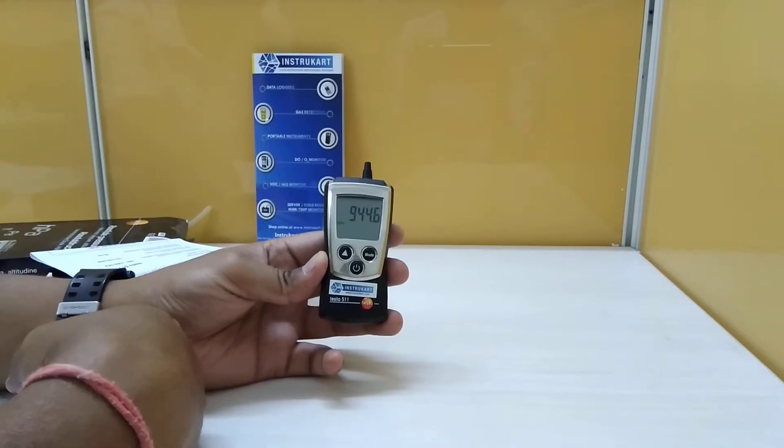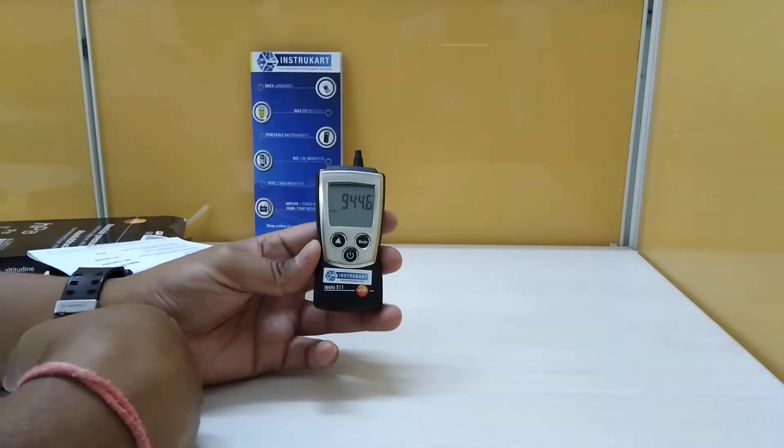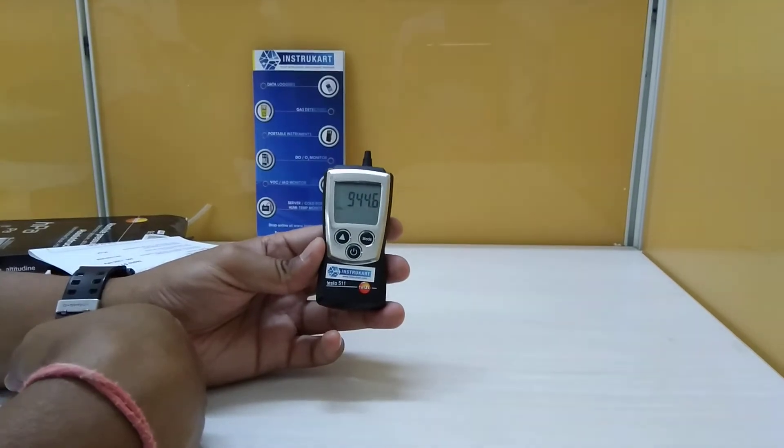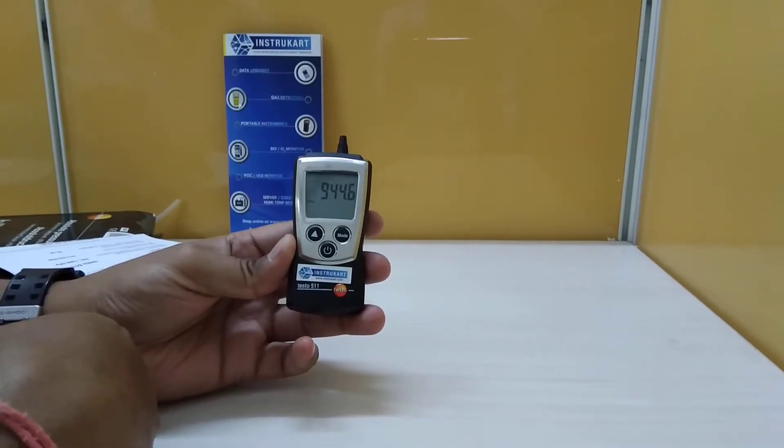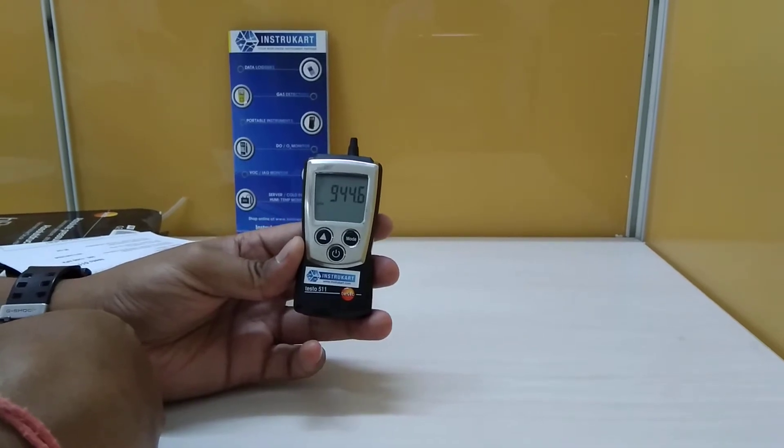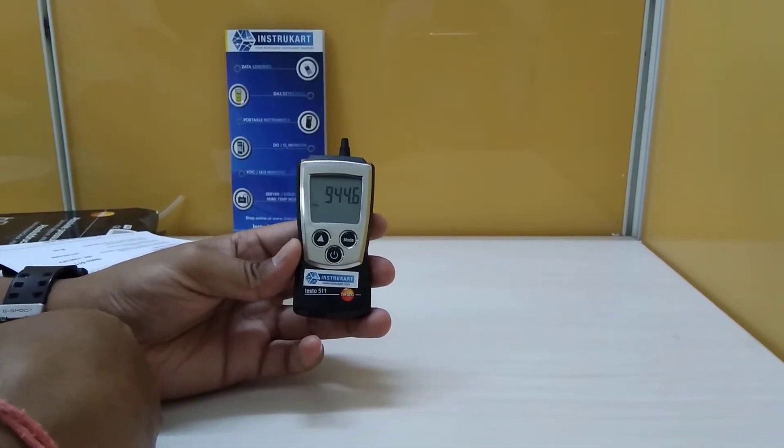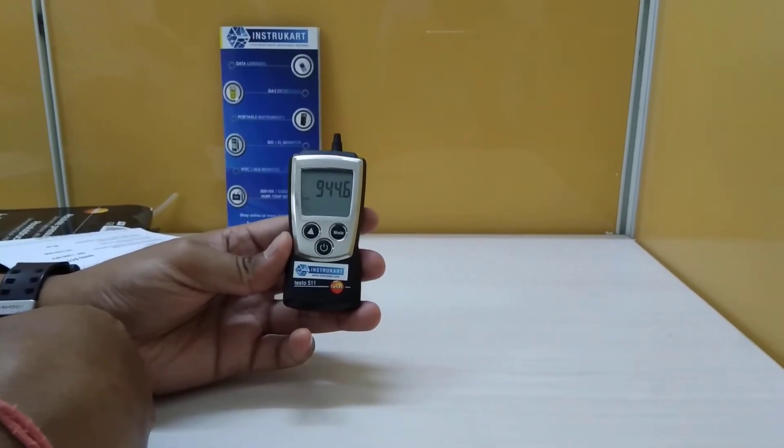Hello and welcome to Instocart Holdings, your worldwide instrument partner. We have an instrument to check absolute pressure, barometric pressure, and altitude, which is from Testo, model number Testo 511.